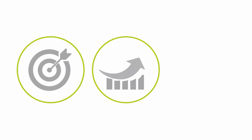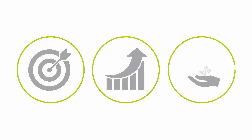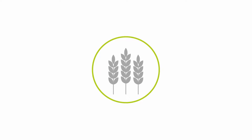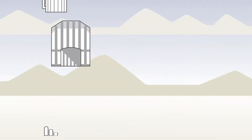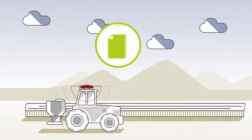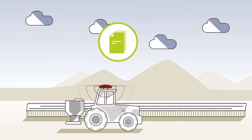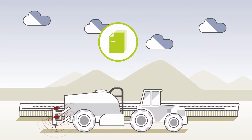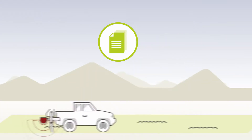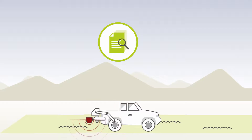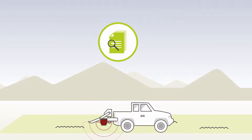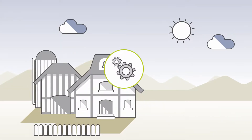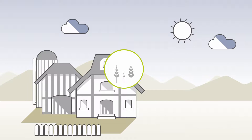Precision, efficiency and sustainability are the most essential things for farmers. Today, sensors and machines deliver valuable information to optimize field work. But who should arrange and analyze all this data flow? How does it work and what benefit does a farmer get?